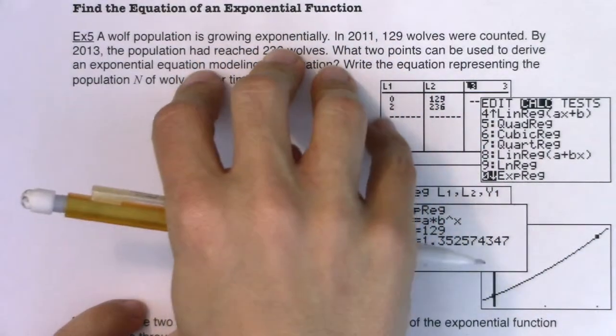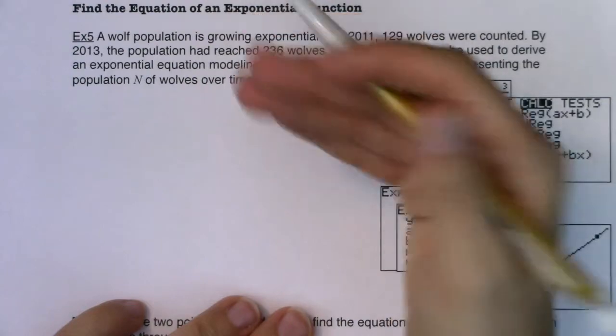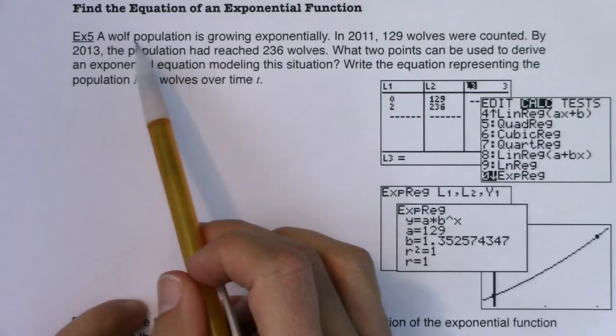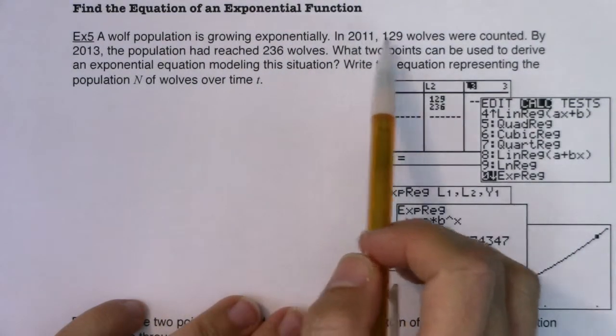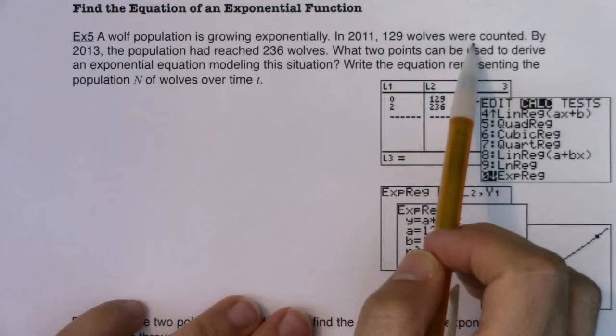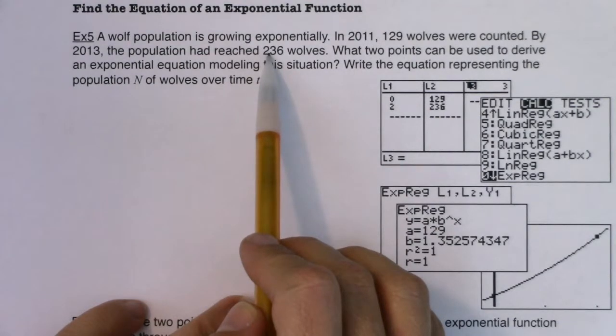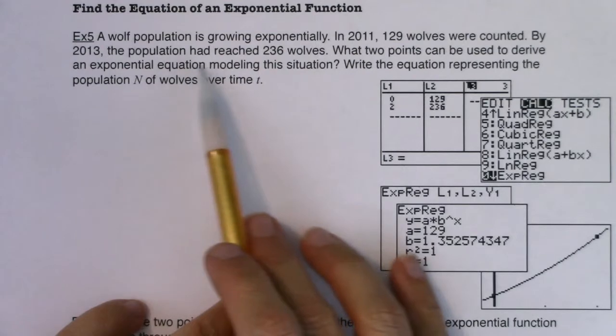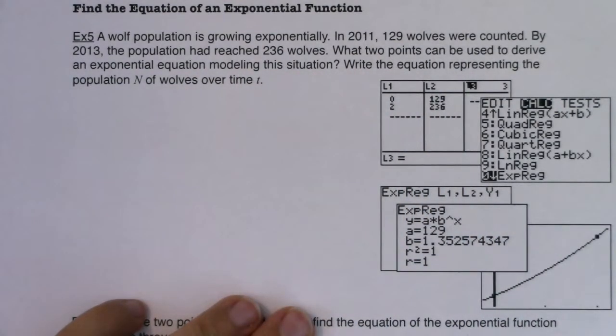So as I read through this problem, let's think about what are the variables in this problem? What are some buzzwords that I can latch on to? So we have a wolf population is growing exponentially. In 2011, 129 wolves were counted. By 2013, the population had reached 236 wolves. What two points can be used to derive an exponential equation modeling this situation? Write the equation representing the population n of wolves over time t.